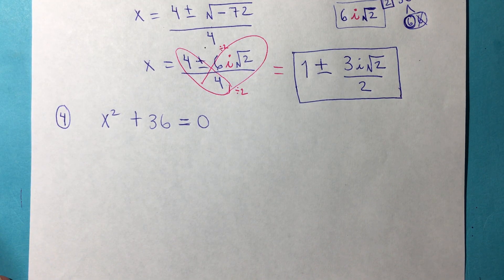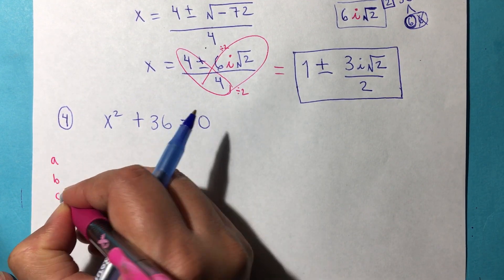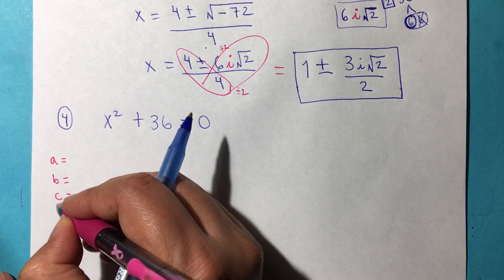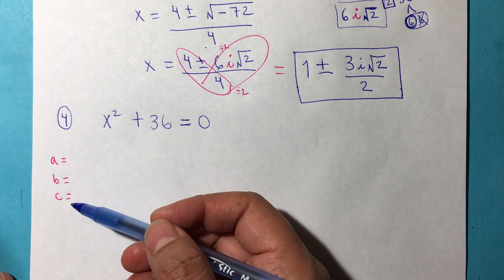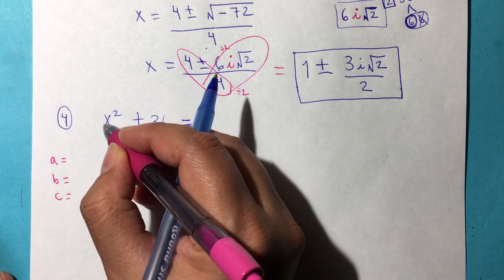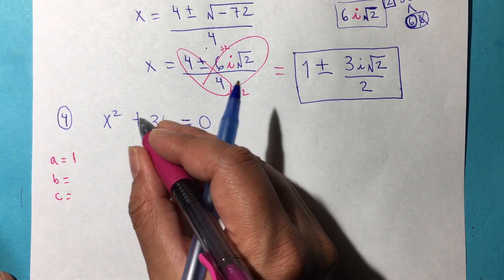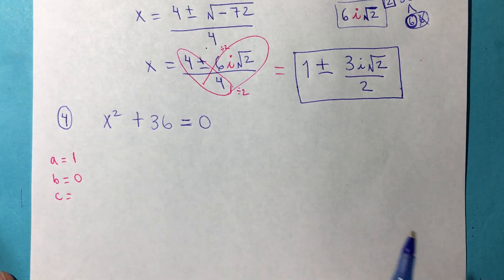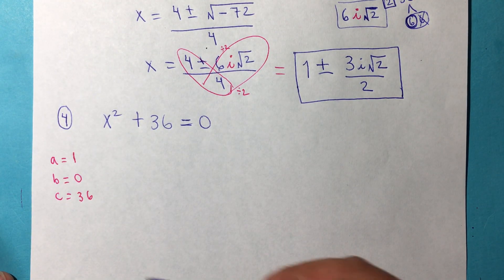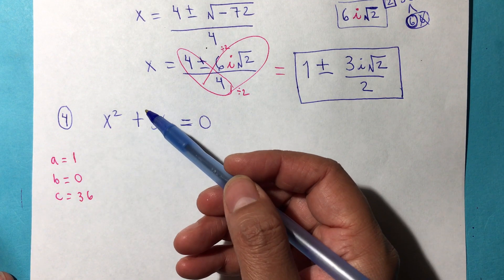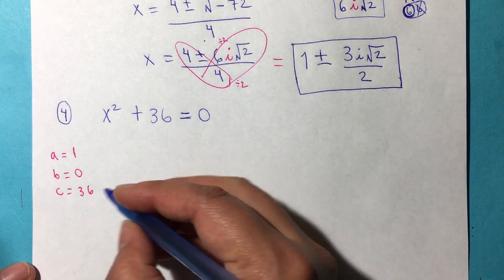For number 4, I'm going to solve it in two different ways. The first thing I want you to notice is that this one has only two terms, which means one of a, b, or c will be 0. You have to be very careful about which variable you give the 0. A is always with x squared, so the coefficient is 1. B is always with x, but here we don't have a term with x, so b is the one that should be 0. We do have a constant, so c will be 36. B will always be with x, and c will always be with no variable — very important to see the difference.